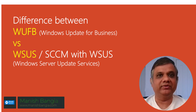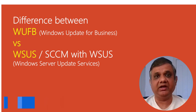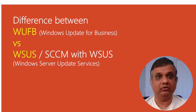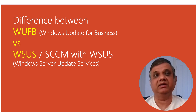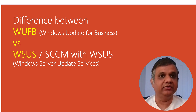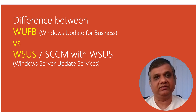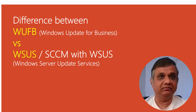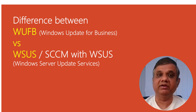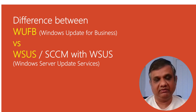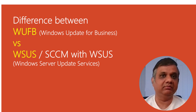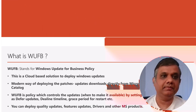Hello everyone, this is Manish and in this video I'm going to discuss the difference between Windows Update for Business and WSUS. In a nutshell, Windows Update for Business is a cloud-based, modern way of deploying updates using the internet, while WSUS is a traditional, legacy way of deploying updates by downloading from Microsoft to an on-premises server and distributing within your organization. We'll first cover what each solution is, then discuss the differences.